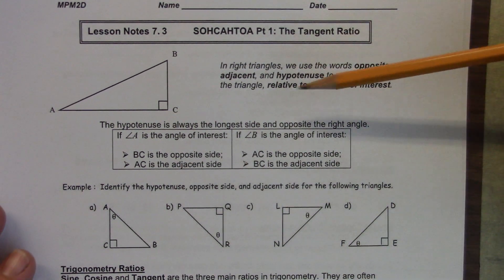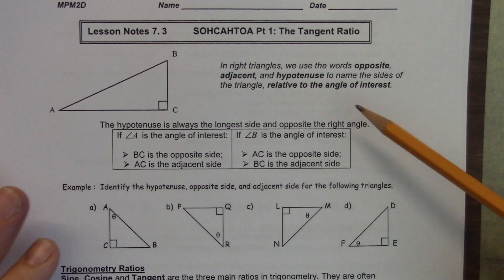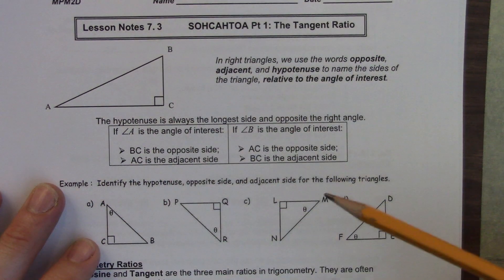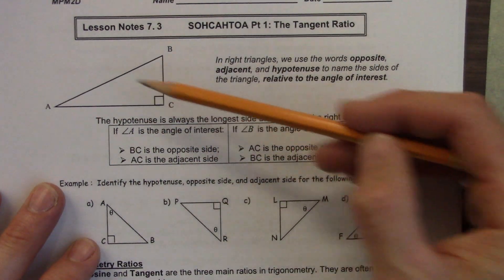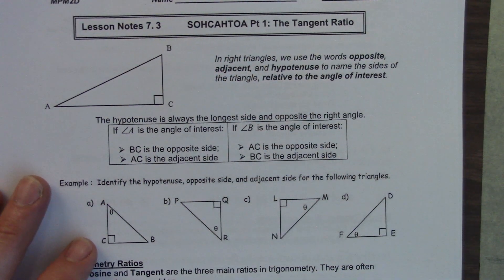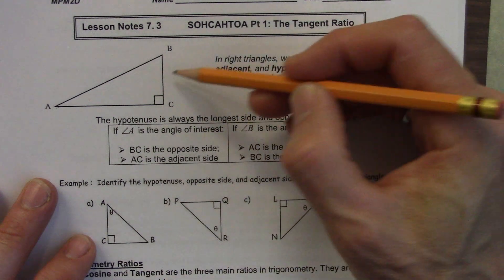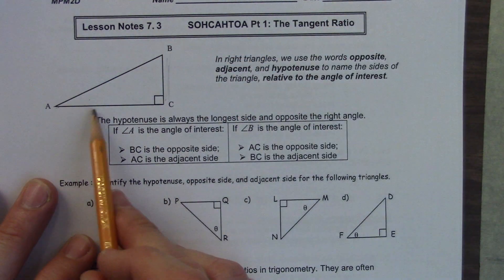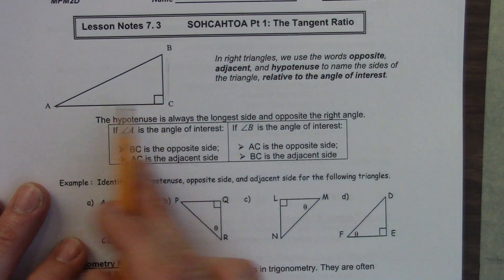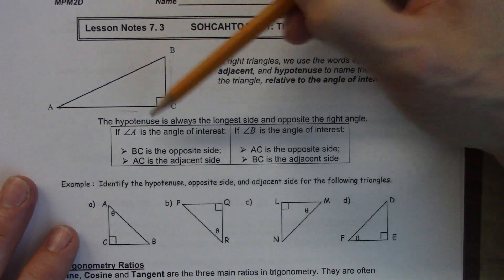In right triangles we use the words opposite, adjacent, and hypotenuse to name the sides of the triangle relative to the angle of interest. The angle of interest can change, so the hypotenuse is the one thing that never changes, but the adjacent and opposite will change depending on the angle we're looking at. Adjacent is another word for 'next to.' The hypotenuse is always the longest side and opposite the right angle.